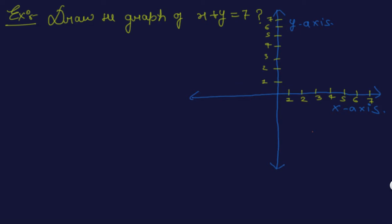Hi friends, now I take one more illustration on plotting the graph of linear equation in two variables. See this example: draw the graph of x plus y equal to 7. Firstly, we draw our table as I showed in the previous illustration solution.